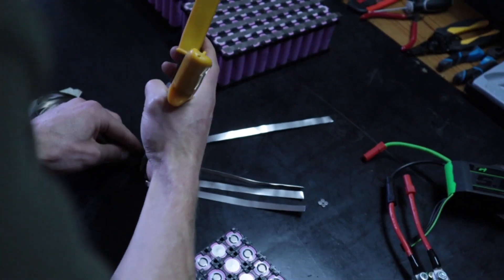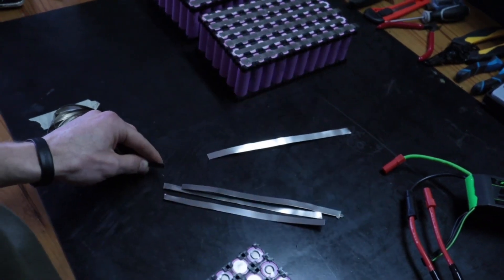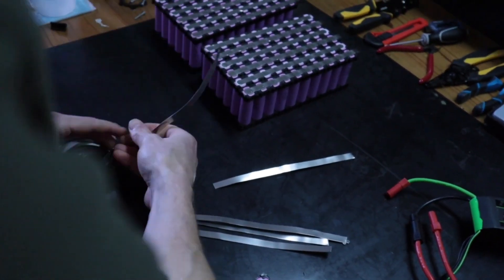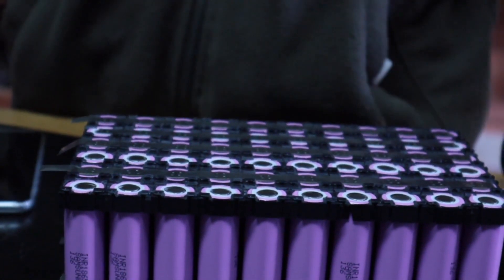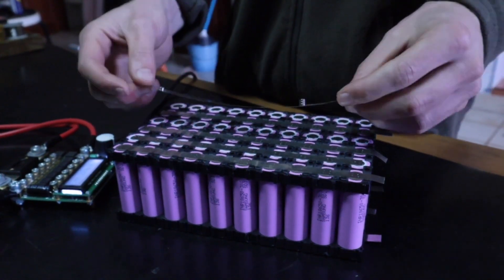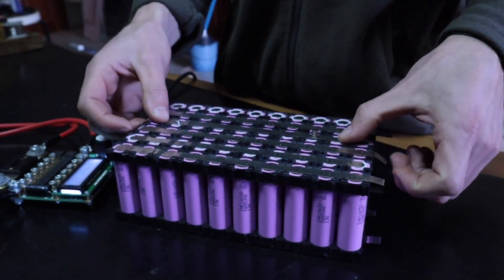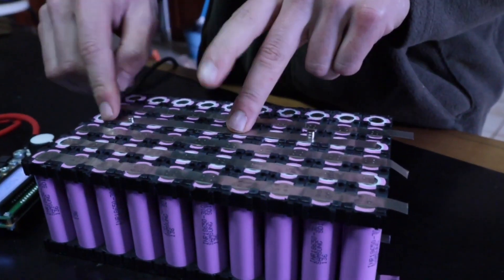After that, we can start to decide how to put the nickel strips, and this depends on the max current of the battery and how many strips we need to cover that. When we have an idea of how we are going to put them, we can start to cut them down. I like to cut all the strips first and group the different sizes together so it's easier to figure out which one goes where.